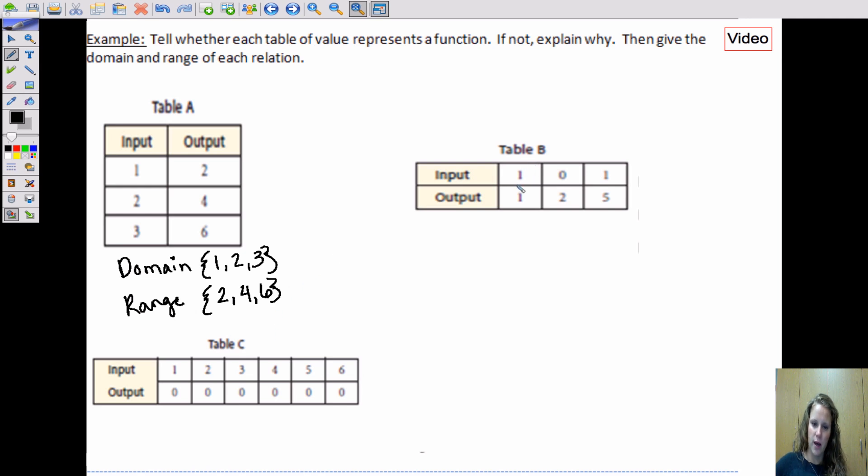Over here we have inputs of one to one, zero to two, and then look at here, one also goes to five. So if we were to graph this, the number one would go to one and would go to five. So it would not pass that vertical line test. So this is not a function.